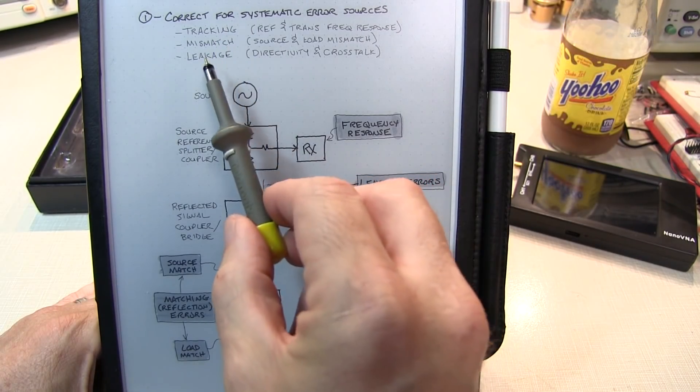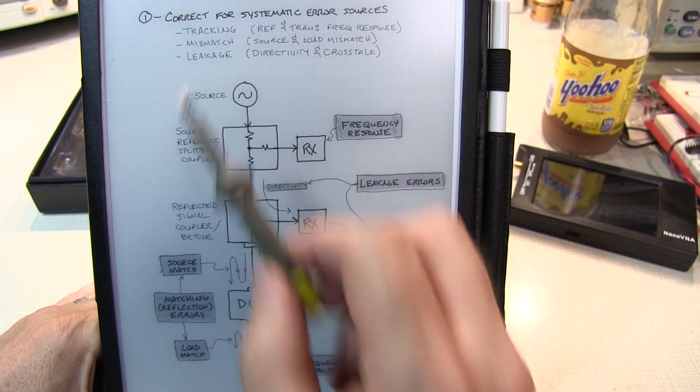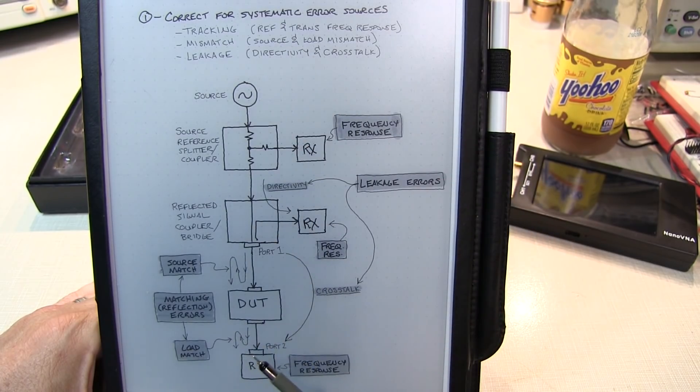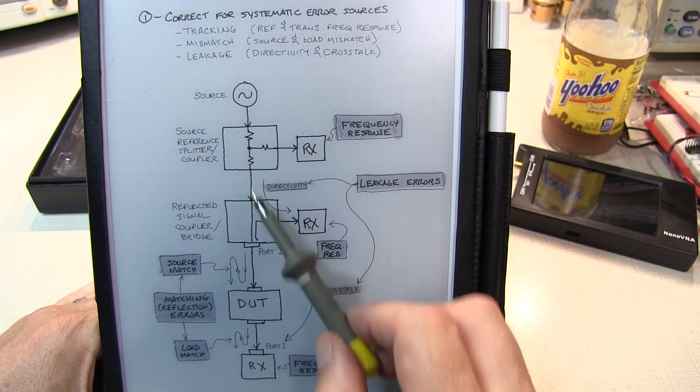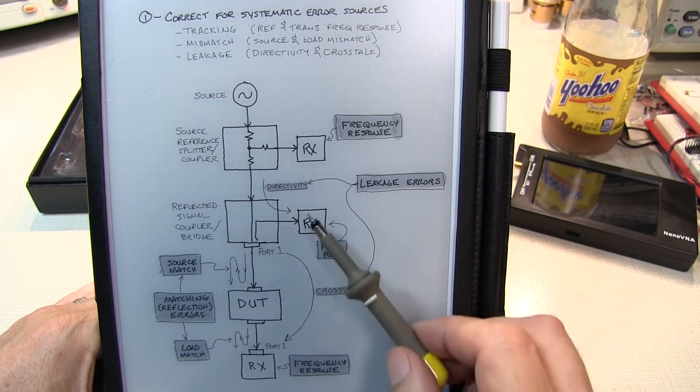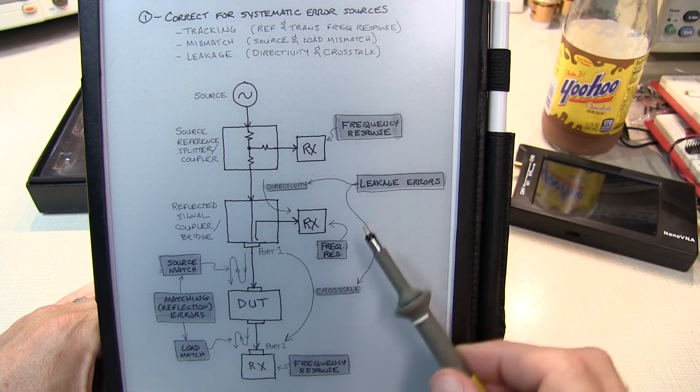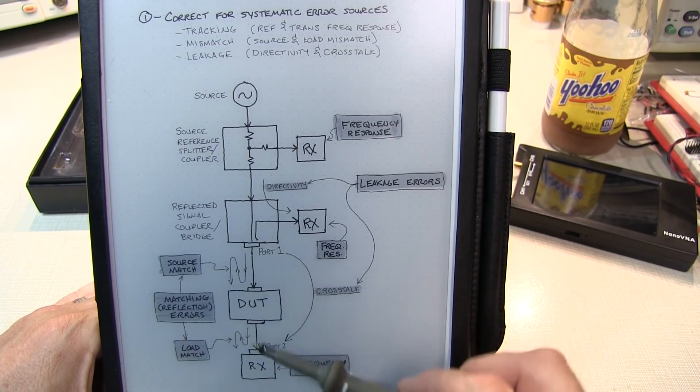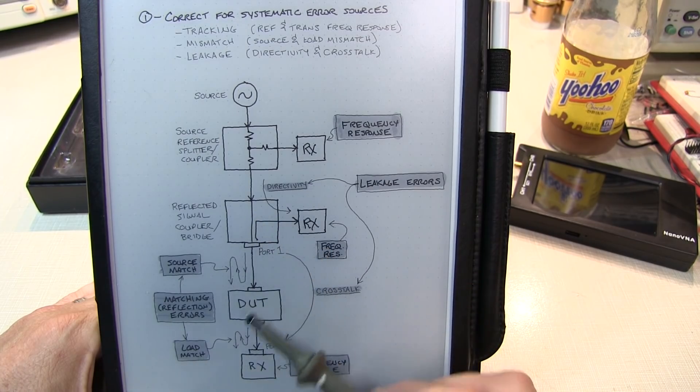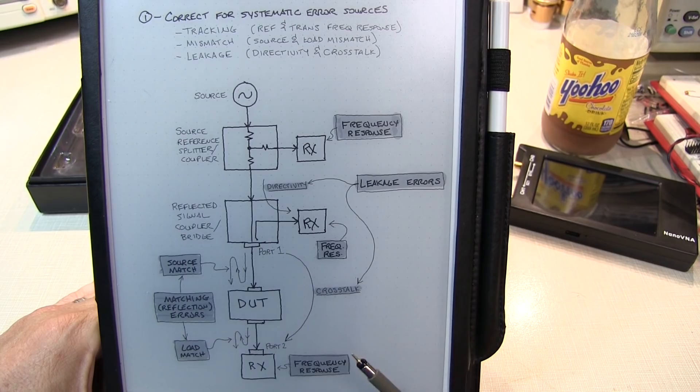Now a third class of errors we need to correct for are leakage errors. And these are unintended RF paths. For example, they may be related to the directivity of the directional coupler. Now ideally the directional coupler is only going to couple energy coming in the reverse direction, but there will be some leakage in the forward direction. And of course, we want to eliminate the effect of that leakage path going to the port 1 receiver. Another is crosstalk. Crosstalk is coupling between the two ports of the VNA, which is essentially a path for RF to go around and bypass the DUT. And of course, we want to be able to correct for and remove that so we can only measure what's going on in the DUT.